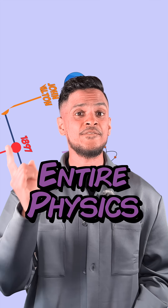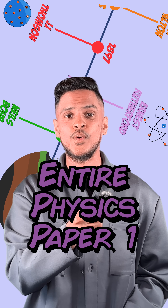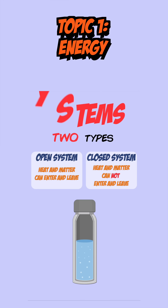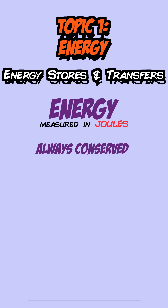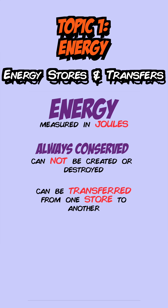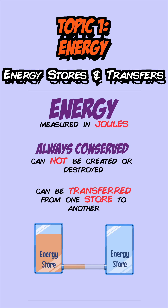Here's a summary of the entire Physics Paper 1 spec. Energy is measured in joules and it's always conserved, which basically means that energy cannot be created or destroyed. It can only be transferred from one store to another.